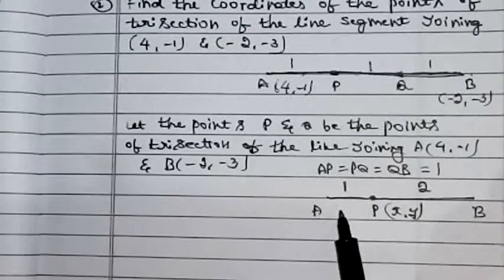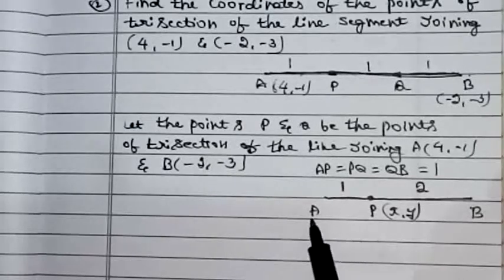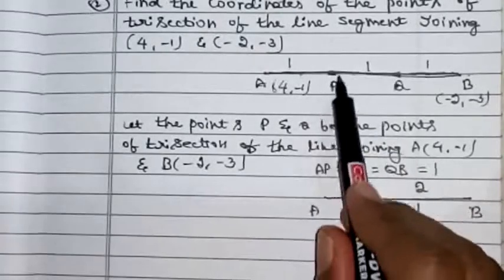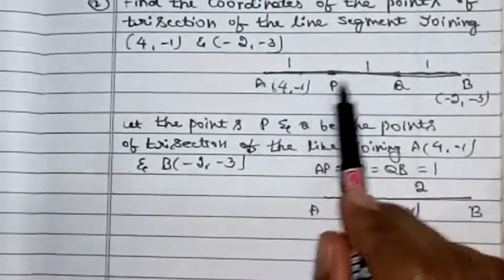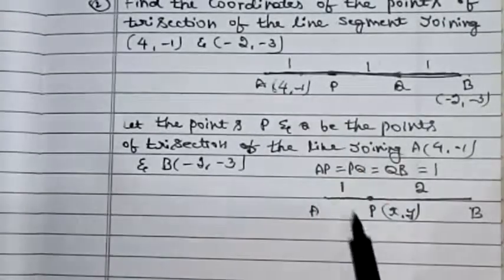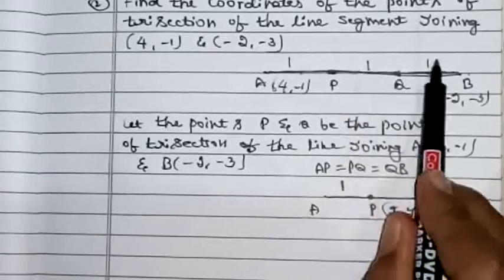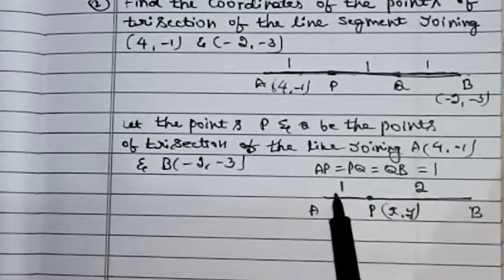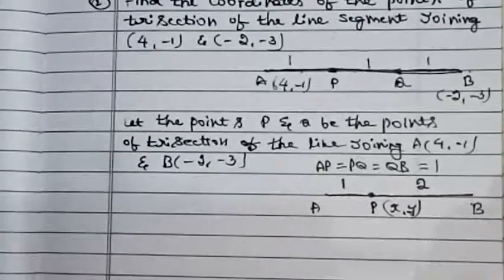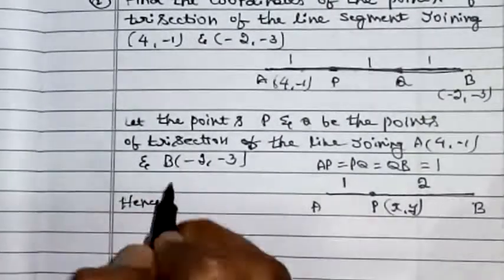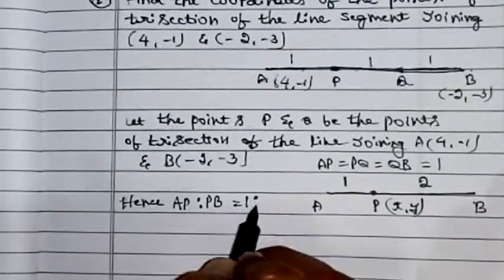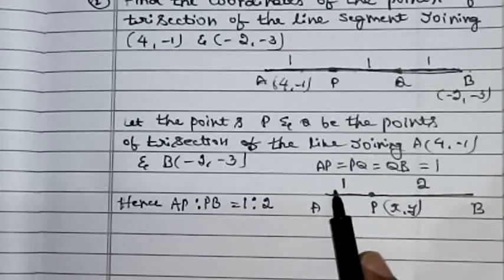To find the coordinate of P: the line segment AB is divided at point P in the ratio 1:2. How does 1:2 come? From A to P there is 1 part, and from P to B there are 2 parts. So AP:PB = 1:2. The AB line segment is divided at point P in the ratio 1:2.